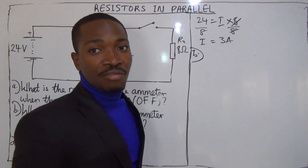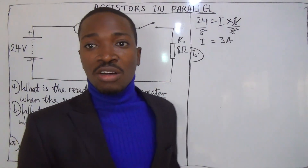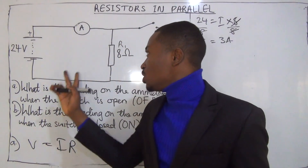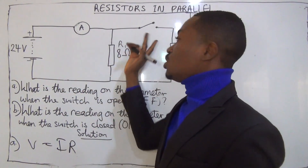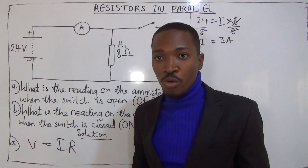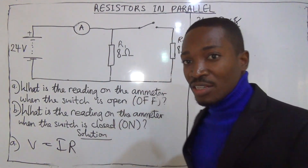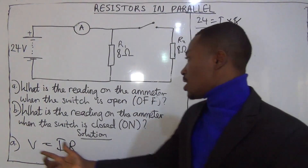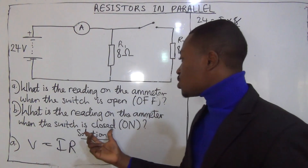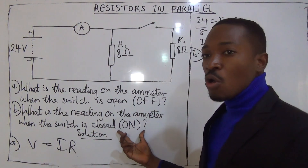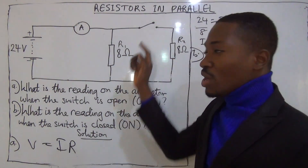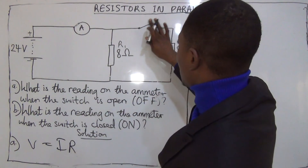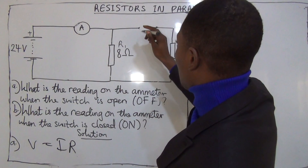That's all. So I have found the reading of the ammeter when the switch is open. Now let's go to the next part. What is the reading on the ammeter when the switch is closed or on?